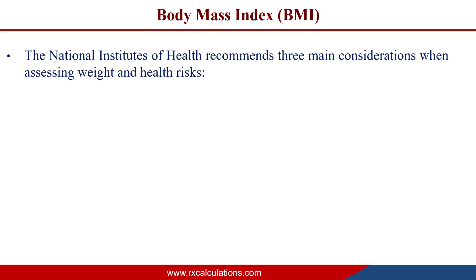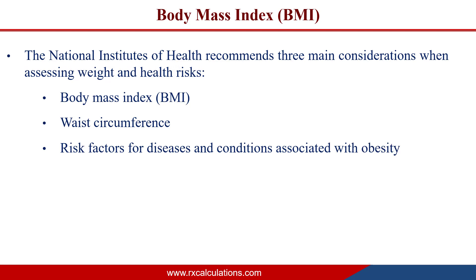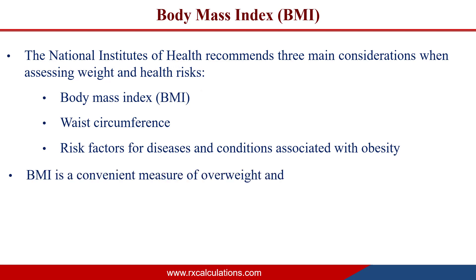The National Institutes of Health recommends three main considerations when assessing weight and health risk: body mass index, waist circumference, and risk factors for diseases and conditions associated with obesity. In this video, we're just going to focus on body mass index, which is the BMI.